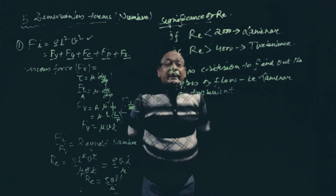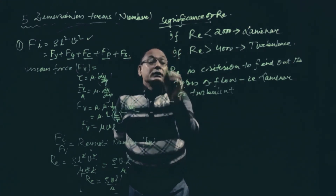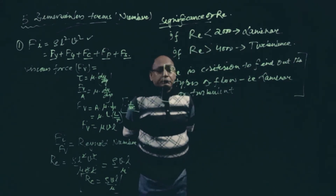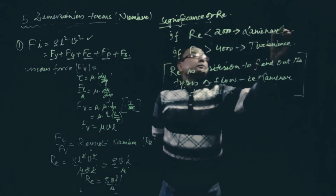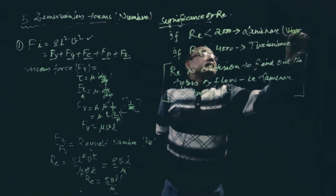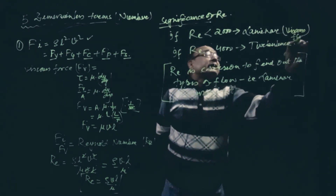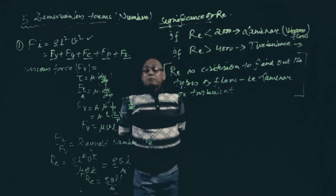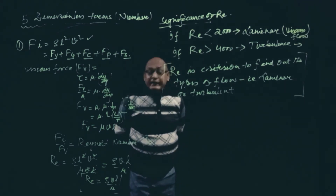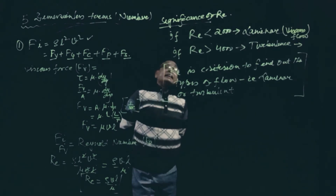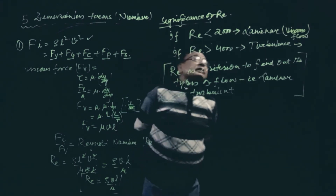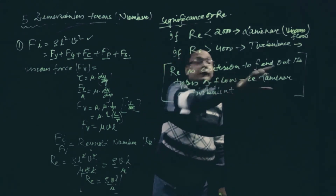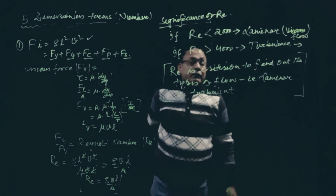That is the physical significance of why we study Re. There are two separate chapters to study: one is viscous (laminar) flow and the other is turbulent flow — two separate units. In those chapters also we will be finding Re, and based on the Re number we determine the types of flow. So Re's significance is that it is the criterion to find out the types of flow, laminar or turbulent.